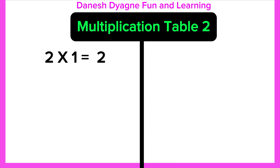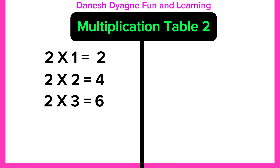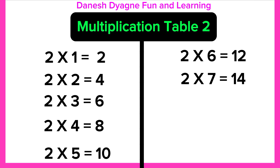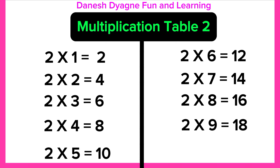2 times 1 equals 2. 2 times 2 equals 4. 2 times 3 equals 6. 2 times 4 equals 8. 2 times 5 equals 10. 2 times 6 equals 12. 2 times 7 equals 14. 2 times 8 equals 16. 2 times 9 equals 18. 2 times 10 equals 20.